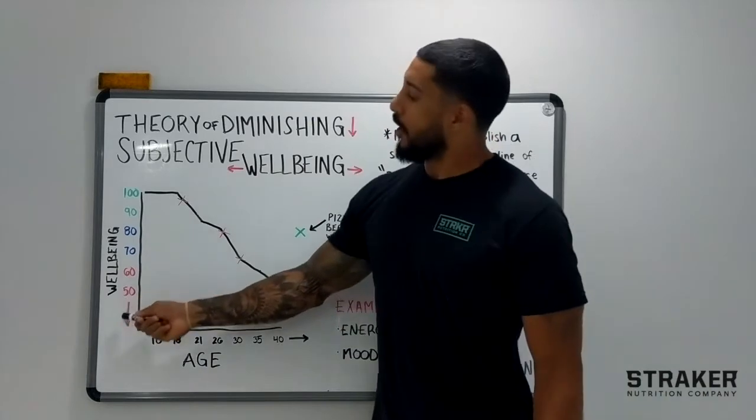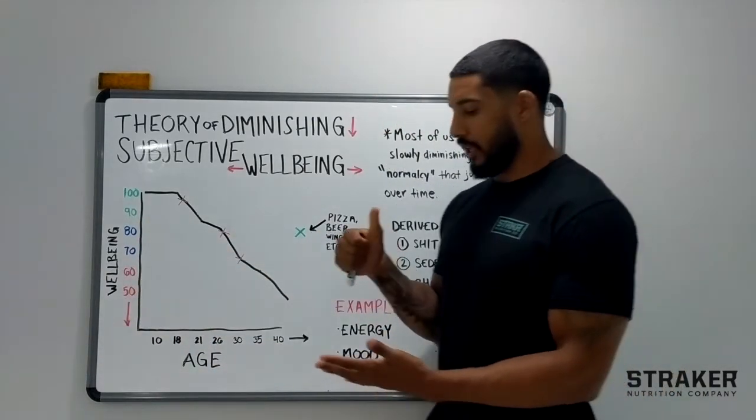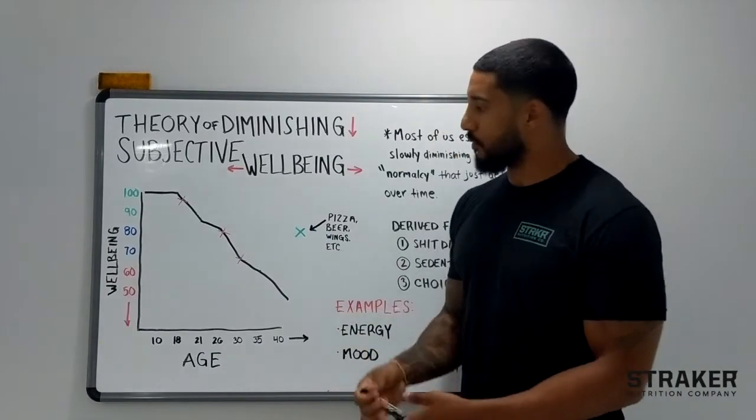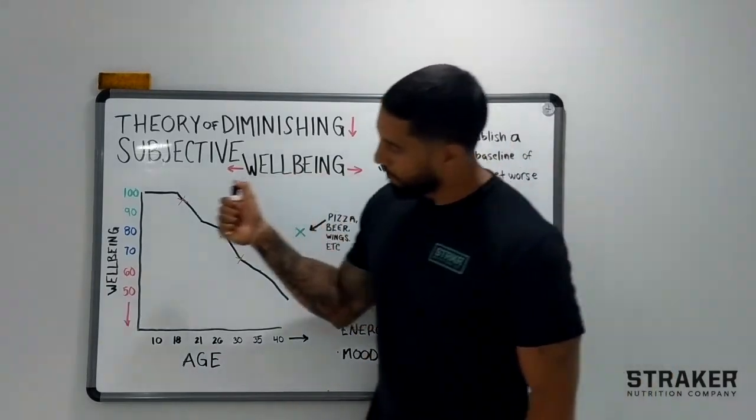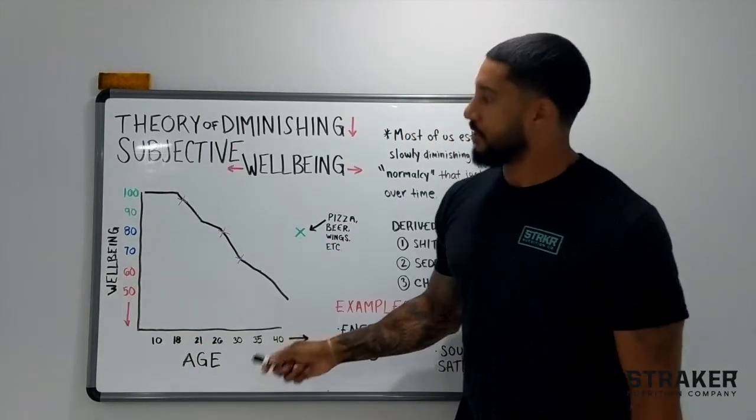So over here I have your objective well-being which can be measured objectively through things like your blood work, energy levels, and other non-subjective things. On the bottom here I have age.